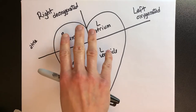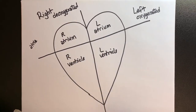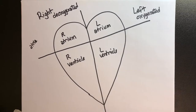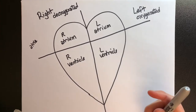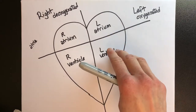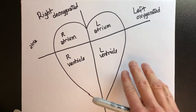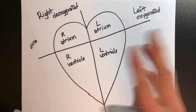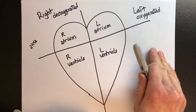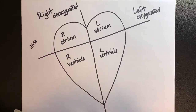We also need to establish what's coming in on the right side and what's coming in on the left side. On the right side of the heart we have deoxygenated blood. Deoxygenated blood is being pulled toward the heart through the venous system and arriving on the right side. Oxygenated blood has already come from the lungs and returned back to the heart and now needs to be pumped out into the aorta and through the system. So the left side of the heart is the oxygenated side.